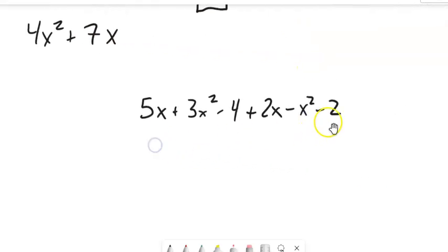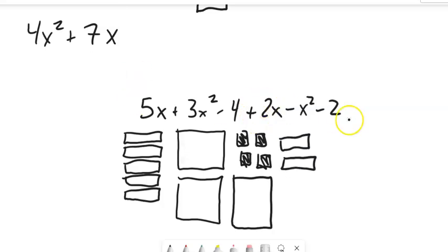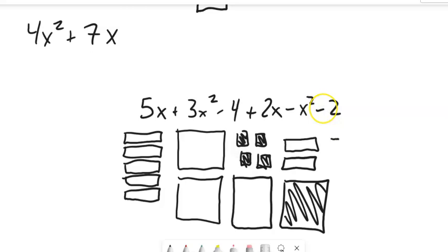Now, if I think of something like this, I've got 5x's, so 1, positive 3x squareds, negative 4 ones, 2 more x's, a negative x squared, and a negative 2, so 2 negative ones.